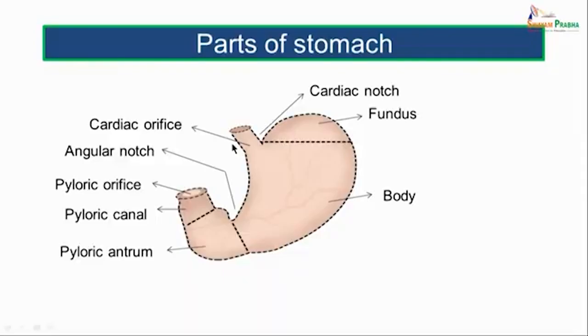The right border is the lesser curvature and the left border is the greater curvature. The greater curvature is about 4 to 5 times longer than the lesser curvature. To summarize: two openings, two borders, two surfaces, and three parts — fundus, body, and pylorus.